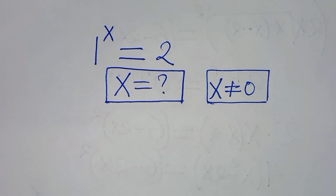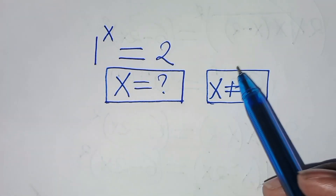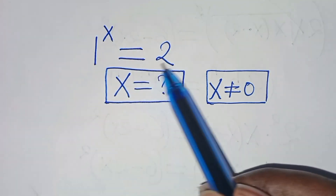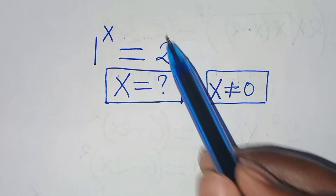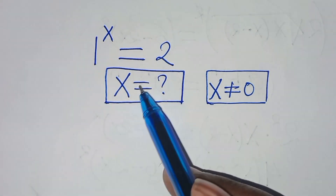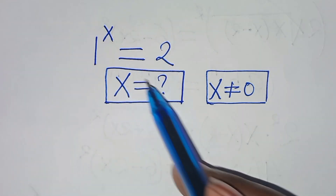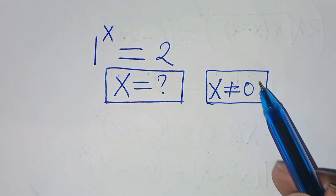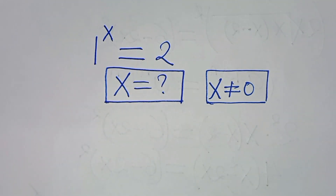Hello everyone. You are welcome to solve this nice algebra problem, which is 1 to the power of x. This is equal to 2. So what is the value of x, given that x is not equal to 0?